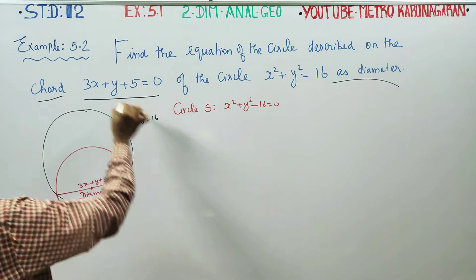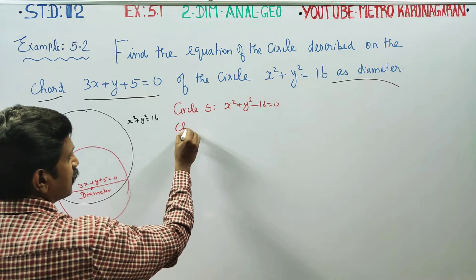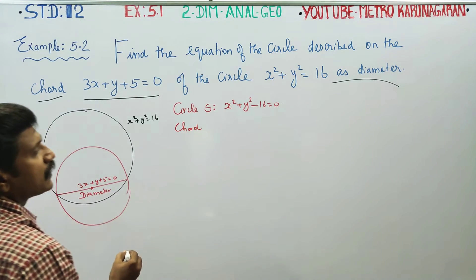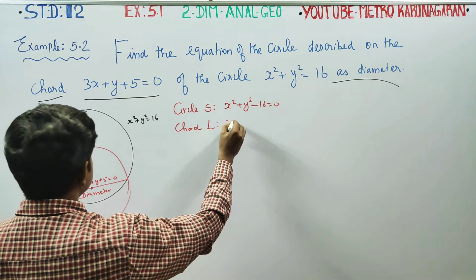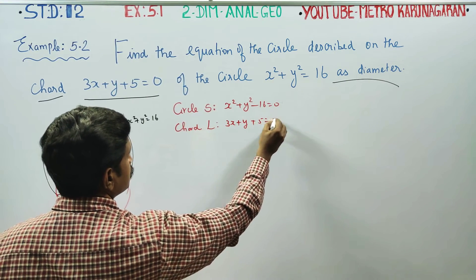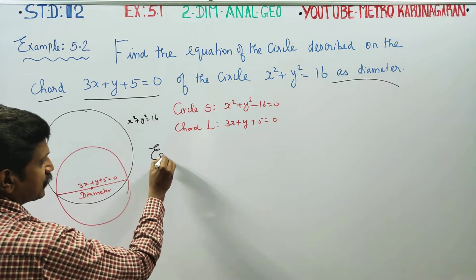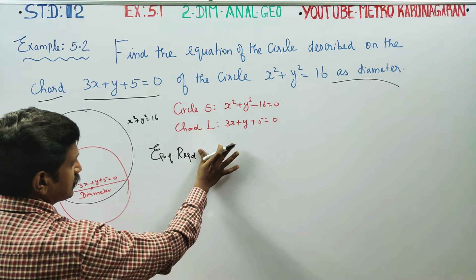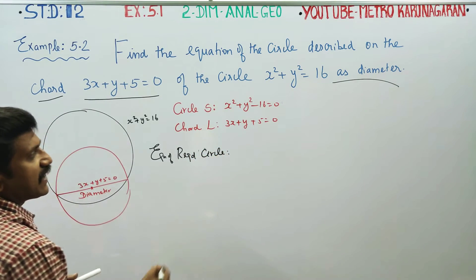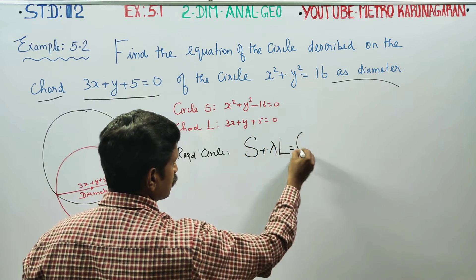x² + y² - 16 = 0. This is my parent circle — the original circle. That's one chord of the circle equal to 0. Now we have the equation for the required circle using the formula S + λL = 0.